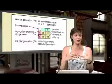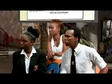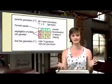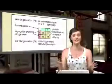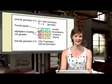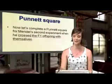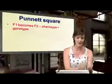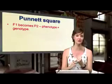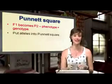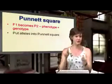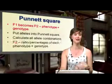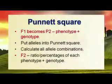Mendel took it one step further. He now had 100% heterozygous pea plants — the alleles are not the same; they code for different heights. He asked: what if I take these heterozygous plants and cross them together? This time our F1 becomes our P2. We write down the phenotype and genotype, split the alleles into the Punnett square, work out all possible combinations, and write our F2 — the second filial generation of offspring.